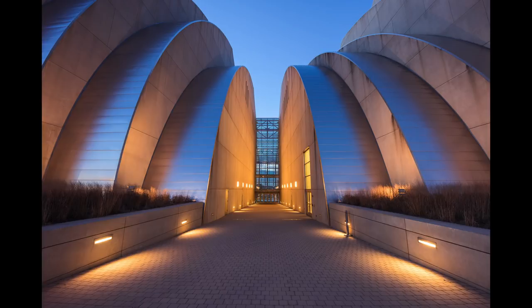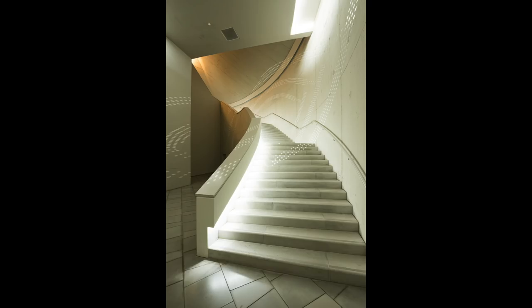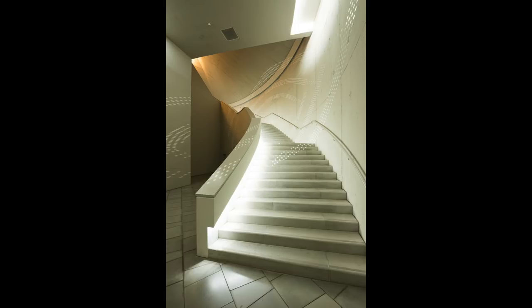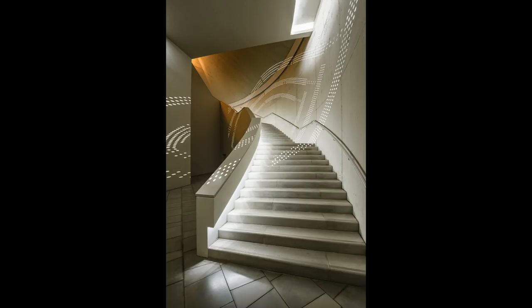Dodging and burning is another form of local adjustment — making things lighter or darker. In this scene with beautiful lights, HDR software might help recover some blown highlights on the stairwell, but it won't help much with the pattern of dots in the background that makes this beautiful eye pattern. By using luminosity masks and selections, I was able to bring back that shape and really showcase the most important part of the image: that pattern of dots on the wall.